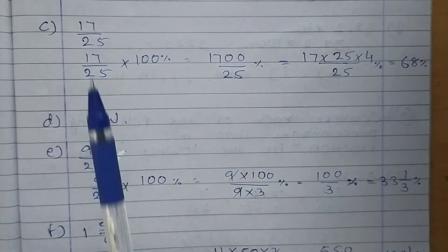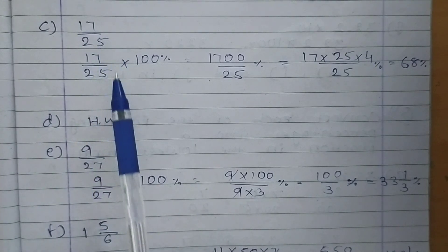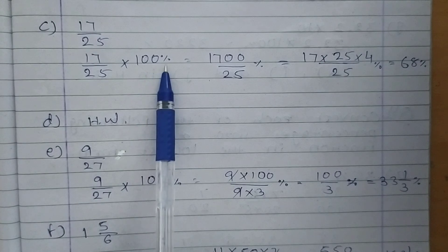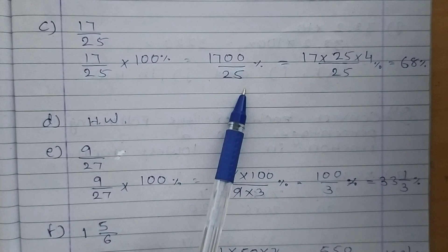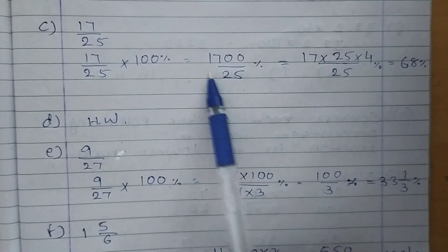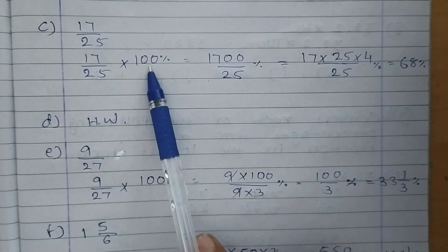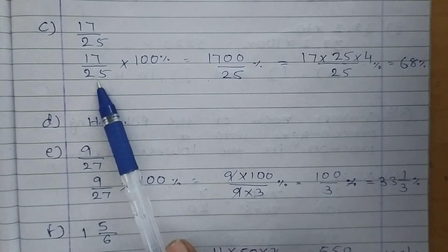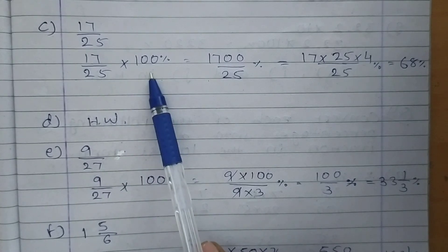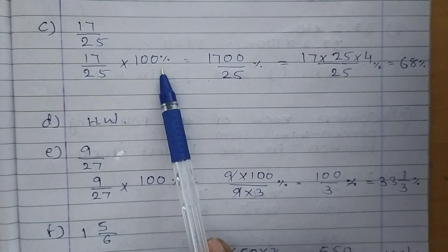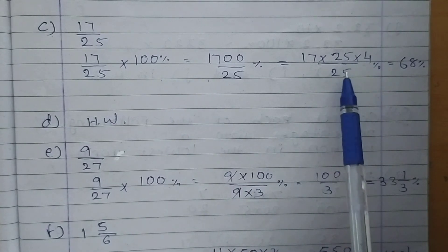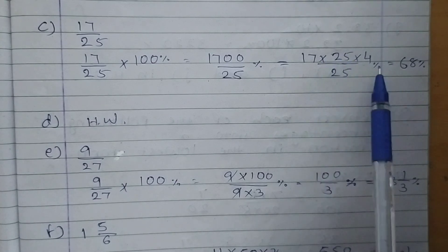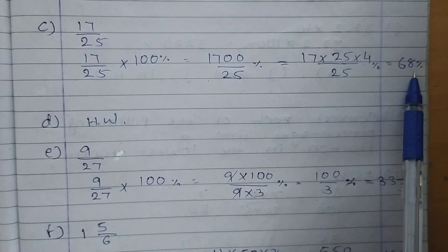Next, Part C: 17 upon 25. 17 upon 25, multiply 100%. Write 17 as it is, and 100 and 25 as they are. Now take factors — 17 write down as it is and take factors of 100 in a manner that allows cancellation with 25 in the denominator. So 25 cancel with 25 in the factors of 100 leaving 4. 17 × 4 is 68%. The answer is 68%.